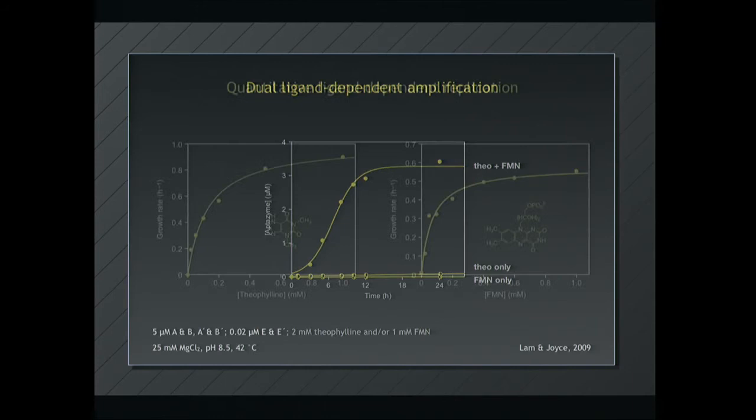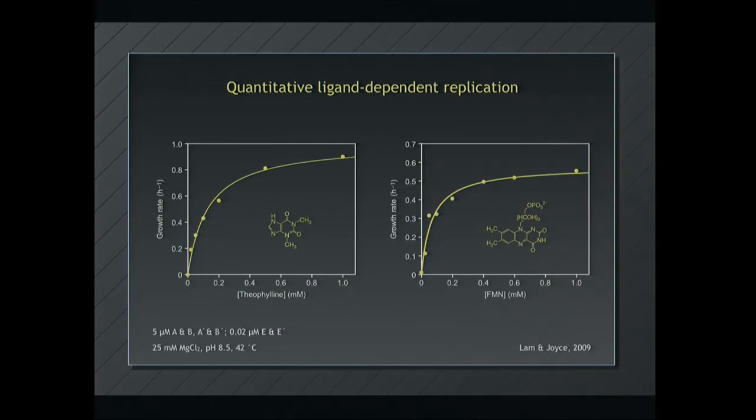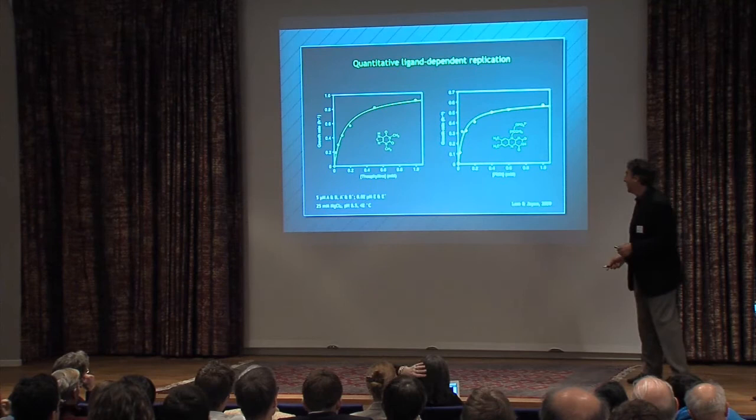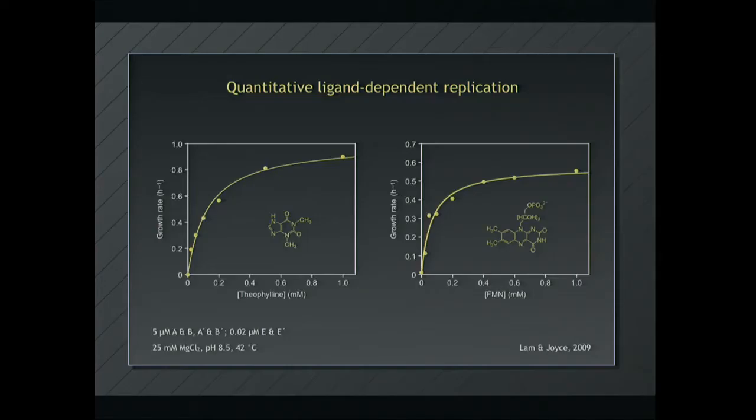Furthermore, the concentration of the ligand, relative to the affinity of the ligand binding site, determines the replication rate. Because any moment when the ligand is bound, the enzyme is on. So the higher the concentration of the ligand, the faster the growth rate until it saturates. So this becomes then an isothermal, it all goes at constant temperature, ligand-dependent, quantitative, exponential amplifier for ligand.